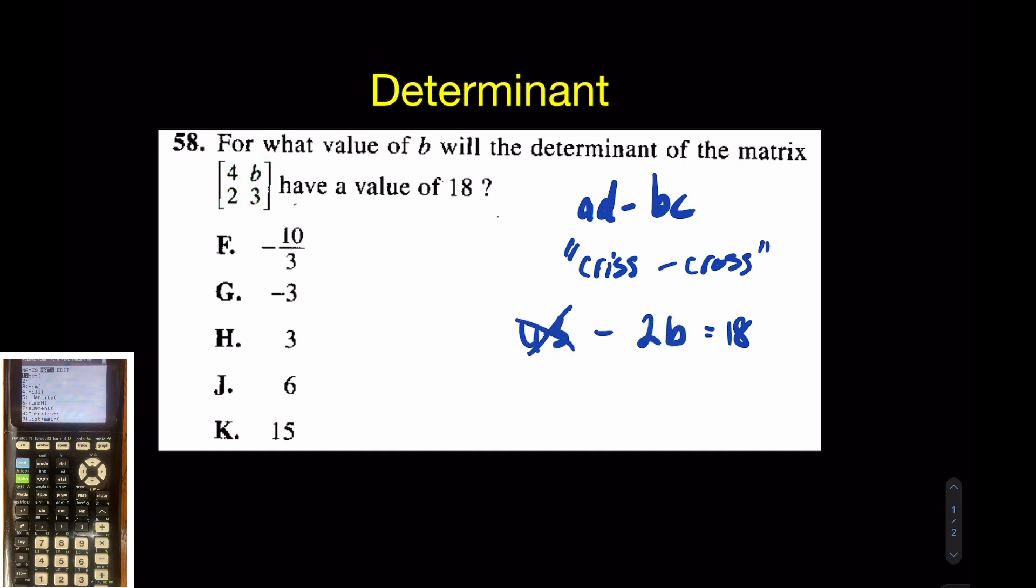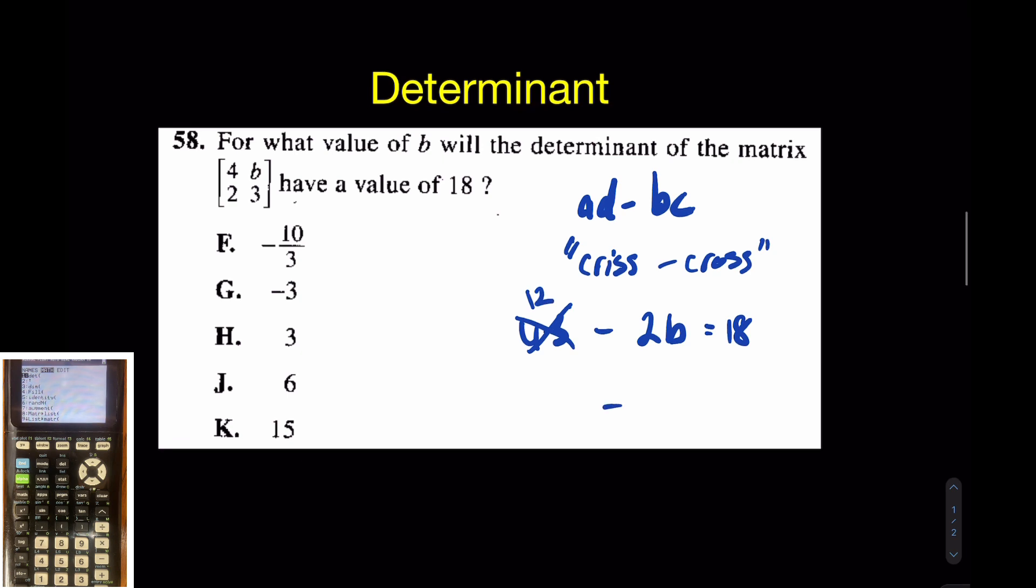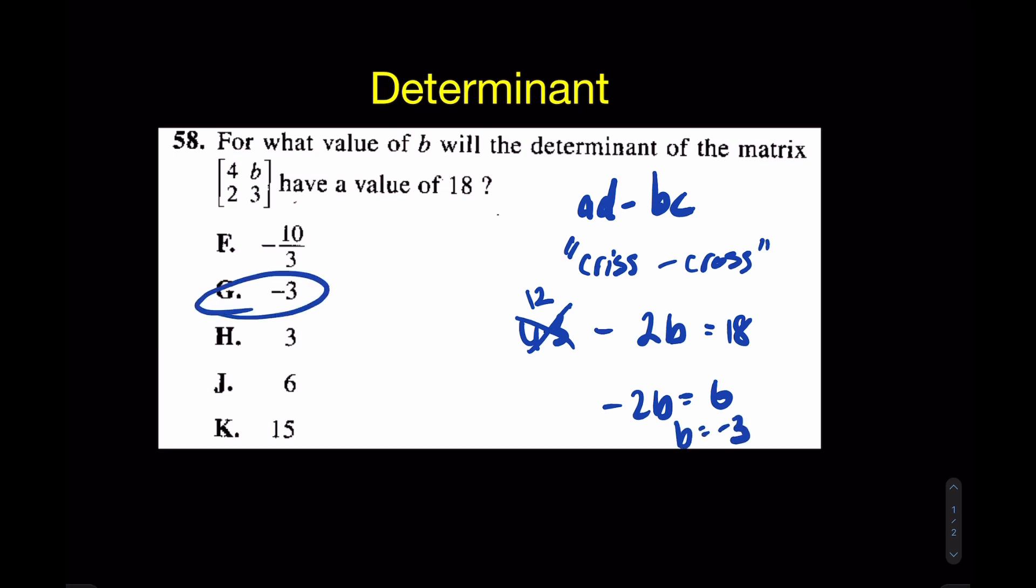We can just solve this. Of course, this is now 12, subtracting 12 from both sides. Negative 2B equals 6. Guess what? B must have been negative 3. I'm liking answer choice G.